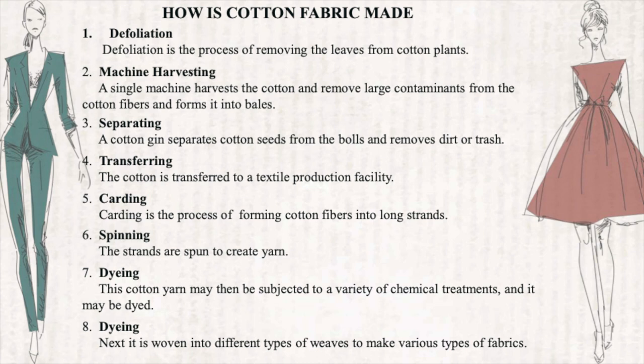To summarize how cotton fabric is made: defoliation removes leaves from cotton plants; machine harvesting collects the cotton and removes large contaminants, forming it into bales; a cotton gin separates cotton seeds from the bolls and removes dirt and trash; the cotton is transferred to a textile production facility; carding forms the cotton fibers into long strands; spinning creates yarn from those strands; and finally the yarn may be dyed and woven into different types of fabrics.